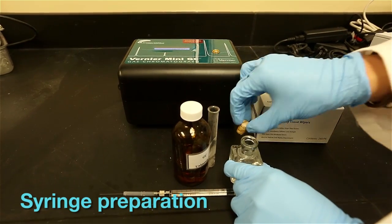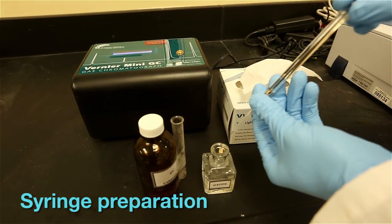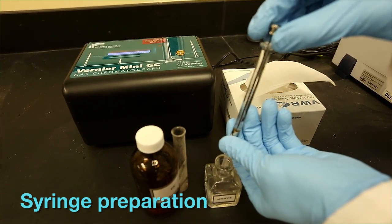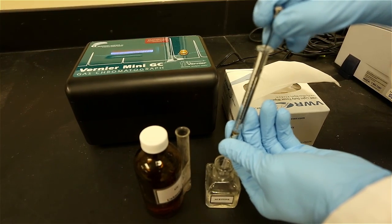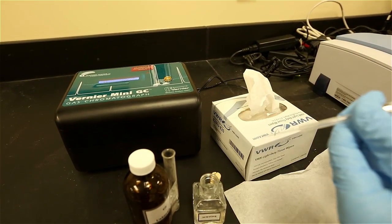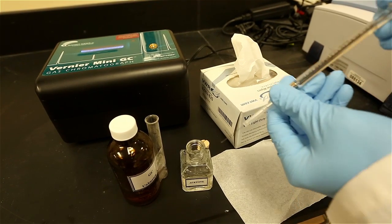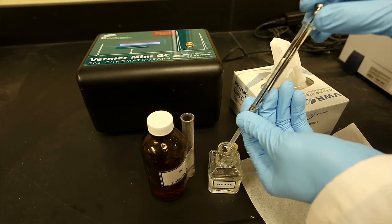Samples are introduced to the GC instrument by a glass syringe. You should be aware that these micro volume syringes are very fragile and very expensive to replace. Please handle with caution and do not pull the plunger back more than 50% of its total volume because the plunger could be pulled out and it is nearly impossible to reinsert it back into the syringe barrel.